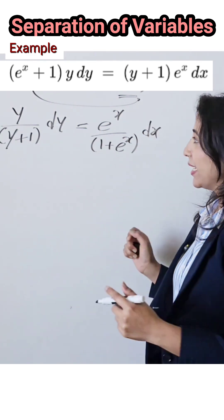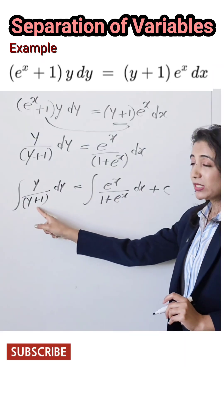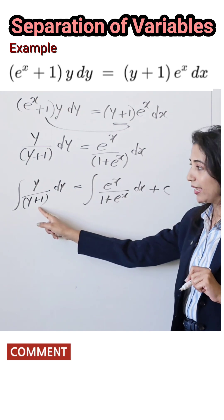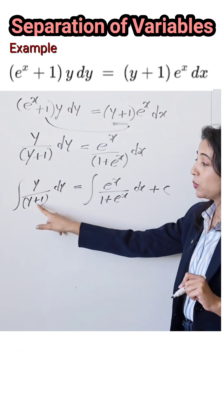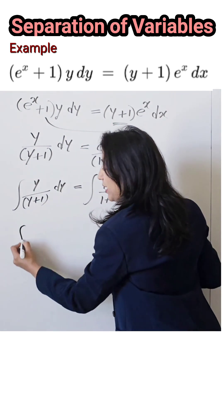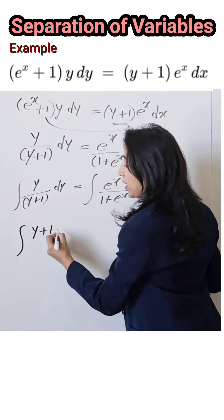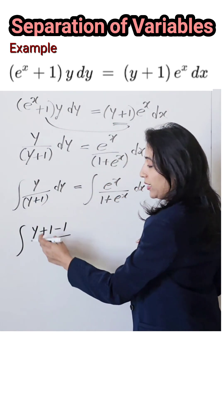What about the integration of this term? You cannot solve this integration directly. Here the derivative of the denominator is not present in the numerator, so we have to adjust. Here I will write, instead of simply y, we take +1 minus 1, just like the denominator, so +1 -1, ultimately it is 0, and the denominator is (y+1) dy.